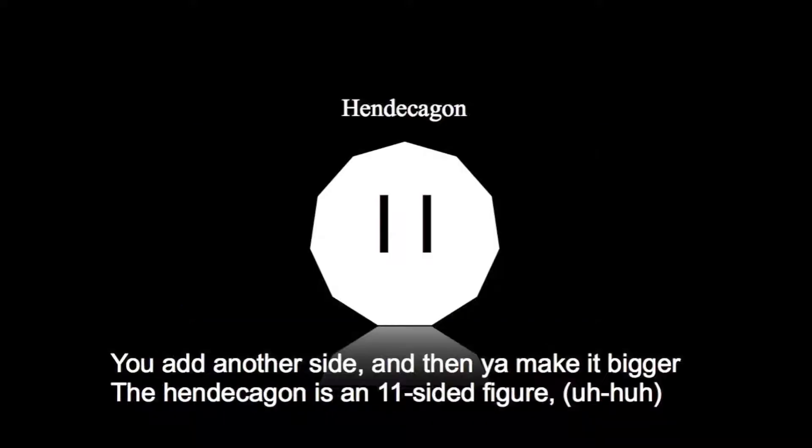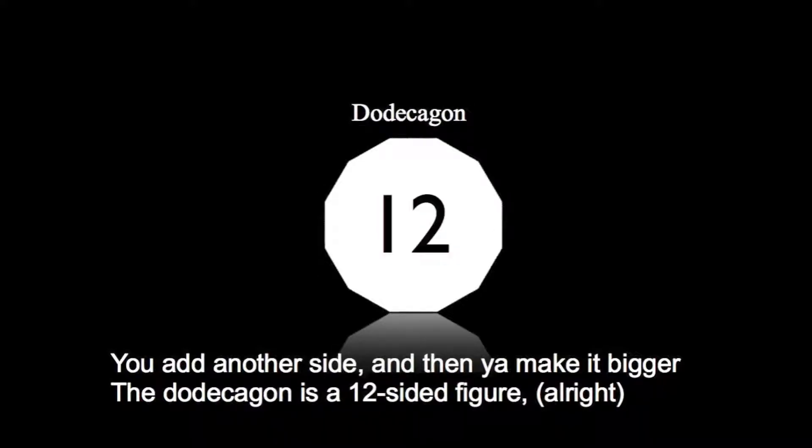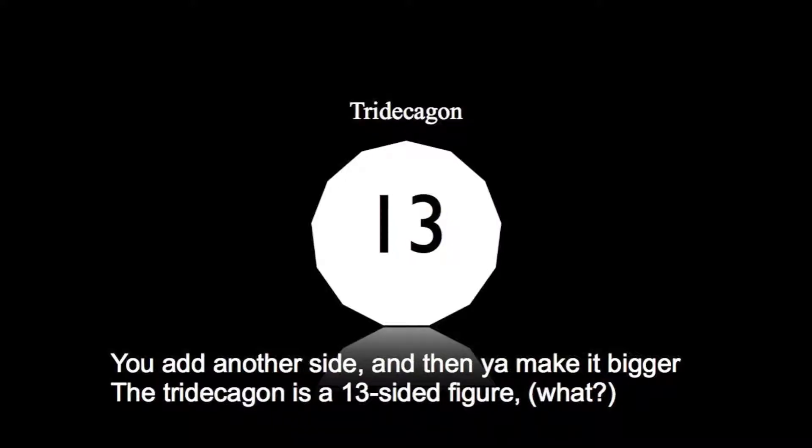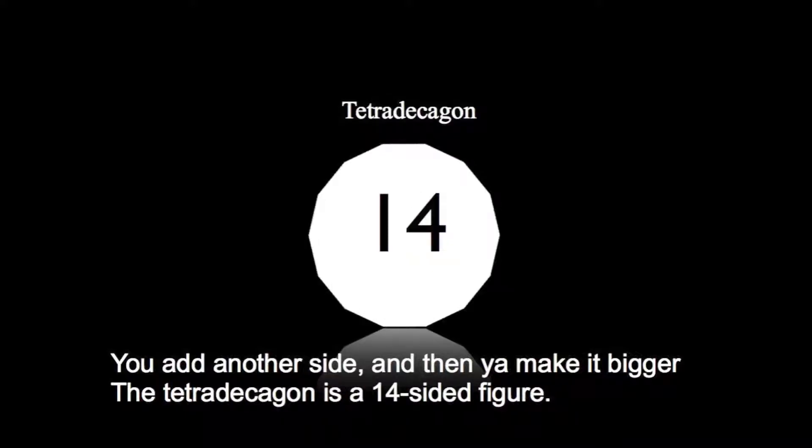You add another side and then you make it bigger. The hendecagon and it's eleven sided figures. You add another side and then you make it bigger. The dodecagon and it's twelve sided figures. You add another side and then you make it bigger. The tridecagon and it's thirteen sided figures. You add another side and then you make it bigger. The tetradecagon and the 14-sided break it.